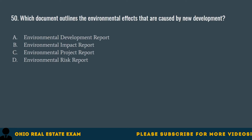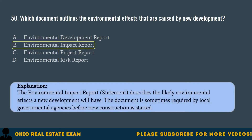Question 50. Which document outlines the environmental effects caused by new development? A. Environmental Development Report. B. Environmental Impact Report. C. Environmental Project Report. D. Environmental Risk Report. The correct answer is B. Environmental Impact Report. The Environmental Impact Report describes the likely environmental effects a new development will have. The document is sometimes required by local governmental agencies before new construction is started.